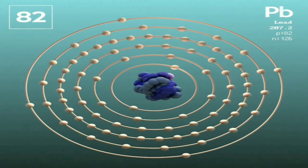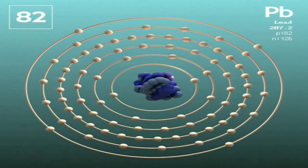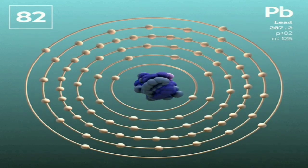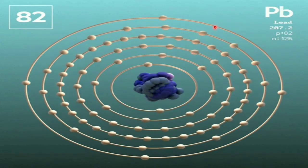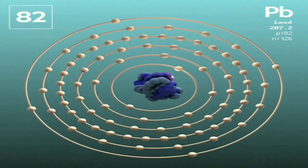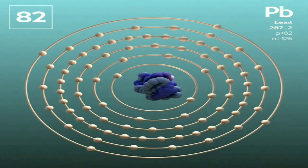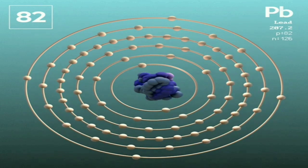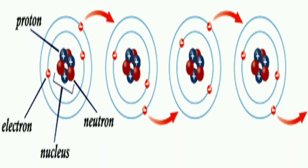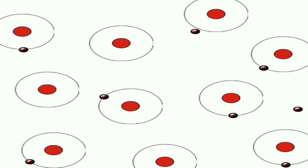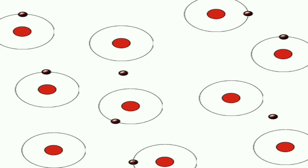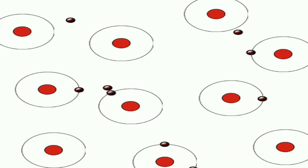For better understanding, we are going to consider Bohr's model of an atom. The maximum number of electrons in different orbits keep revolving around the nucleus. The electrons in the outermost orbit are called valence electrons. In certain substances, the valence electrons are loosely bound and hence move freely from one atom to another. These free electrons are responsible for the flow of electricity. Such substances are called conductors. Examples include metals, graphite, the human body, etc.